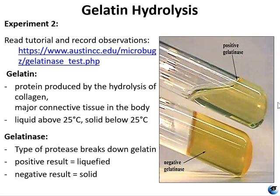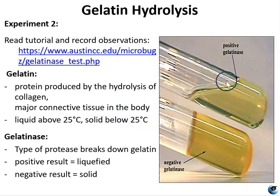A tube of nutrient gelatin is stab-inoculated with a gelatinase-positive organism. Secreted gelatinase will liquefy the media. If the organism is negative for gelatinase production, it does not secrete the enzyme and does not liquefy the media. This is pretty simple: if the bacteria produces gelatinase, the media goes from solid to liquid — that is a positive test. If it doesn't produce this enzyme, it stays solid.